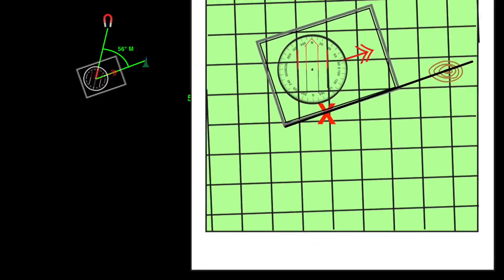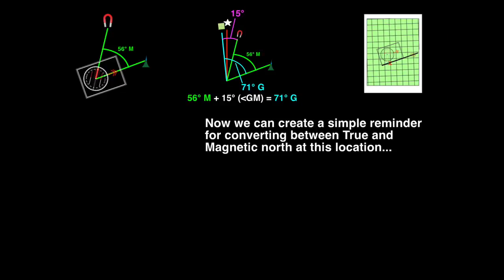Now let's make a simple recipe for converting between the north references at our current location. To convert from magnetic north to grid north, add 15 degrees.